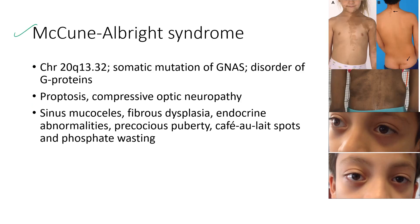Next is McCune-Albright syndrome. Clinical features include proptosis and compressive optic neuropathy, as shown in the clinical images. The systemic features include sinus mucoceles, fibrous dysplasia, endocrine abnormalities, precocious puberty, café-au-lait spots, and phosphate wasting.